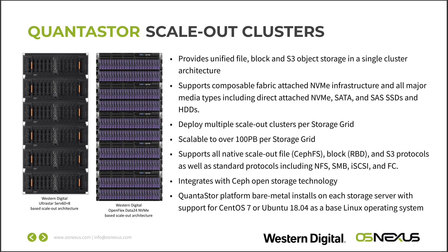Running the S3 service on every single node increases performance linearly as you add more systems. We're even doing some interesting things for our next release around running multiple S3 gateways per node to deliver even more performance. These configurations are highly scalable — rack by rack using the Western Digital Serve 60 Plus Eight, you can do about 7.5 to 8 petabytes per rack using about 9 or 10 nodes per rack, and you can reach really high densities with the Data 24s using 15TB SSDs.